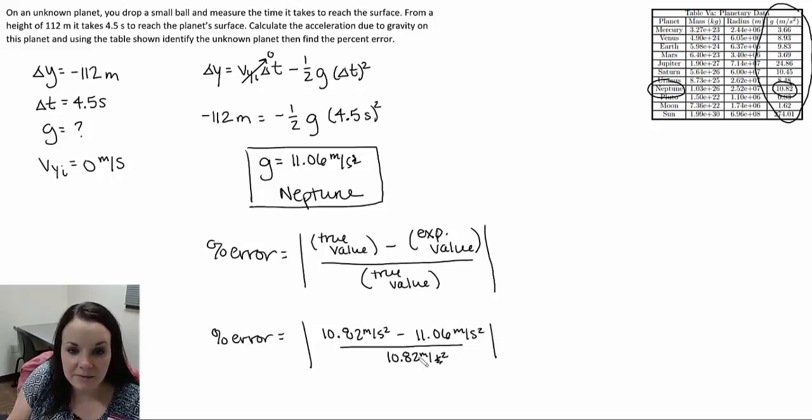When I take the absolute value of that and multiply this out, I get an error of 0.022, or in percentage form, that's 2.2%. So pretty close.